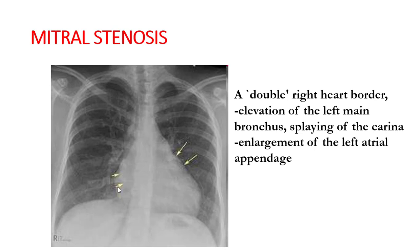Mitral stenosis most commonly results from rheumatic fever. On examination there is a mid-diastolic murmur. Chest X-ray findings include a double right heart border, elevation of the left main bronchus, splaying of the carina, and most importantly, enlargement of the left atrial appendage. Overall heart size is also increased.